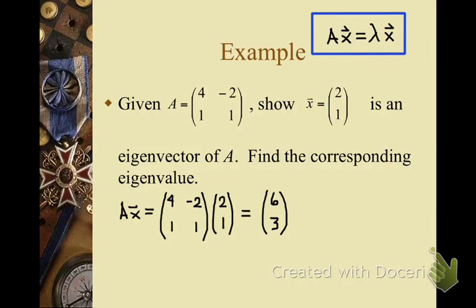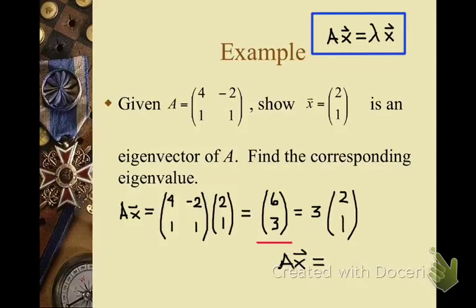We've taken the product of A times x and we end up with the vector [6, 3]. Notice that this is simply 3 multiplied by the vector [2, 1]. So based on our definition, A times x equals 3 times x. This tells us that x is indeed an eigenvector of A, and the corresponding eigenvalue is lambda equal to 3.